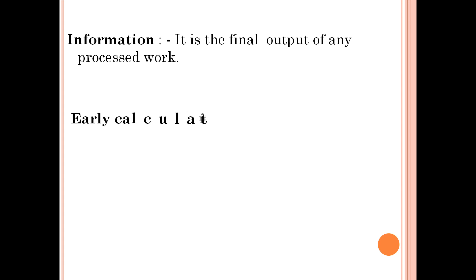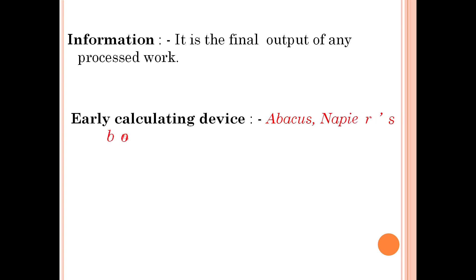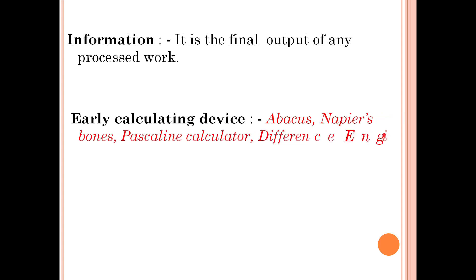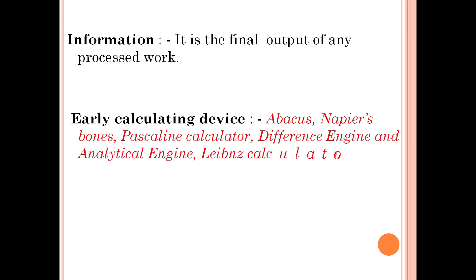Next, let's look at early calculating devices. In today's world we have computers — laptops and desktops — but in earlier times there were no such devices. The early calculating devices include the Abacus, Napier's Bones, Pascal's calculator, the Difference Engine, the Analytical Engine, and the Leibniz calculator.